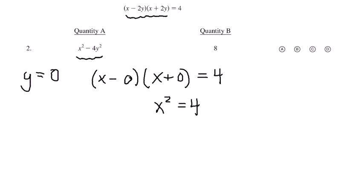We then could say x is plus or minus 2, but we don't even need to do that because if y is 0 and x² = 4, then the expression in column A is simply 4 - 0, which is smaller than 8.